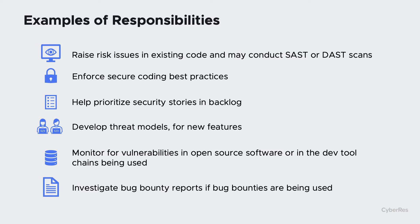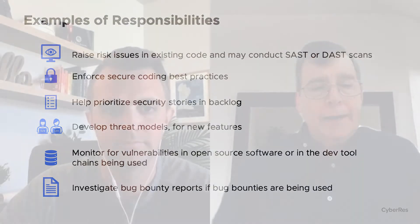Developing threat models in design, or assessing threats of new features, is part of the process. They could be monitoring for vulnerabilities in open source software or in the dev tool chains that the development team is using. If they are using some kind of bug bounty program, these are the folks that will typically be investigating the reports that come out of that associated with their applications. Security champions are also the ones many times validating the huge amount of security issues that come in — they may have to repeatedly explain what a SQL injection or cross-site scripting vulnerability is to a developer and explain why they should care.